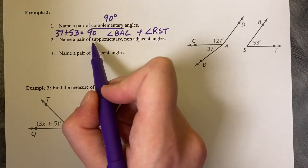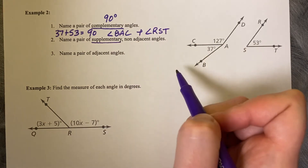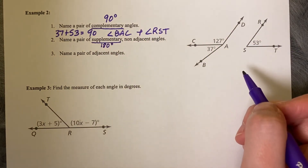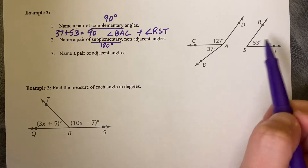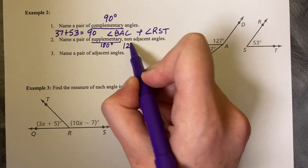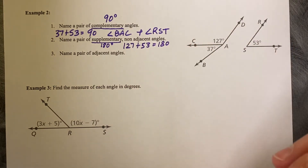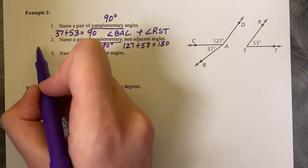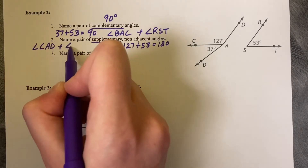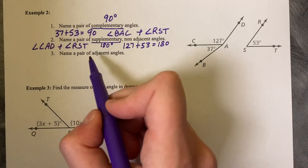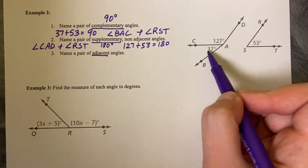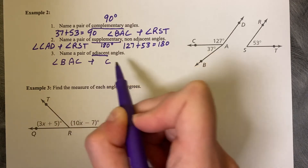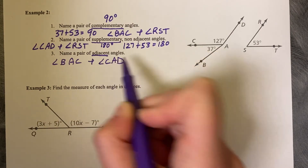Name a pair of supplementary non-adjacent angles — non-adjacent meaning they are not next to each other but sum to 180 degrees. 127 plus 53 equals 180, so the two supplementary angles could be angle CAD and angle RST. For adjacent angles, adjacent means next to each other. The only two angles next to each other are angle BAC and angle CAD.